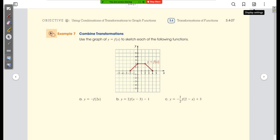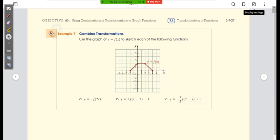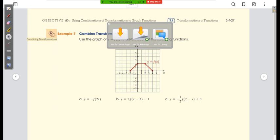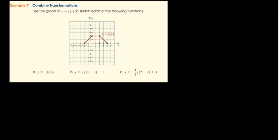This is the last example — a three-parter. We're given a parent function and asked to do transformations on it. Starting with the first one, we have two transformations: taking the negative of the function (reflecting across the x-axis) and a horizontal compression (multiplying the variable by a number).